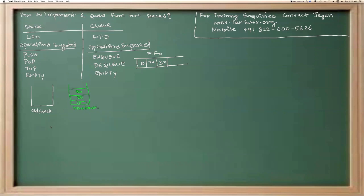Now, how about dequeue? If we directly remove the entry from the new stack and return that value, it is going to return 30 — but the expectation from the user is 10. So obviously we cannot directly pop entries from the new stack and return it. We can probably use the old stack for that.